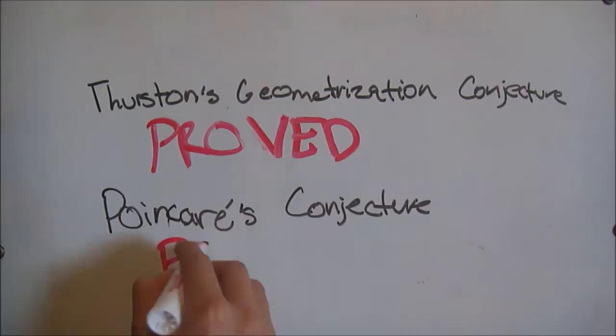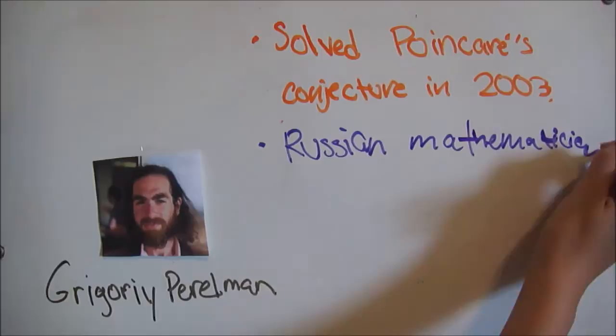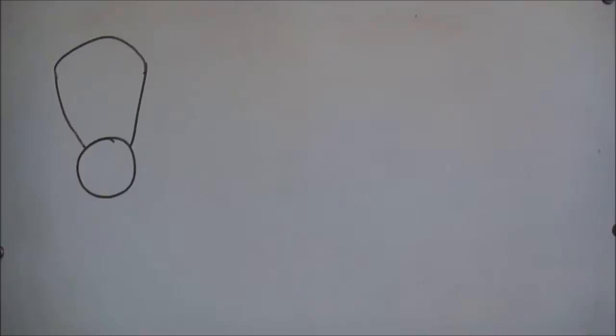It completely proved the Poincaré conjecture, a consequence of proving Thurston's geometrization conjecture. Then, the question was, who wrote it? The proof was written by Gregory Perelman. Perelman is a Russian mathematician who solved the Poincaré conjecture in 2003. It was confirmed in 2006 that he had done it.